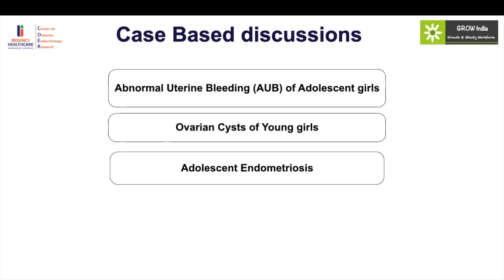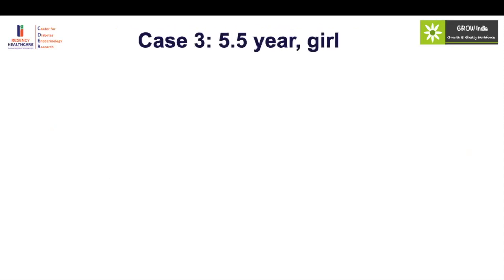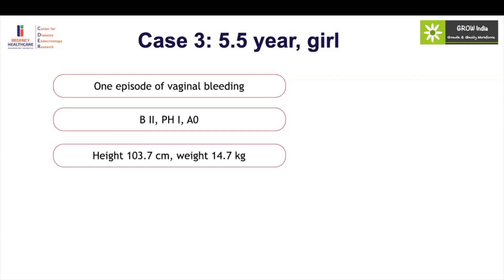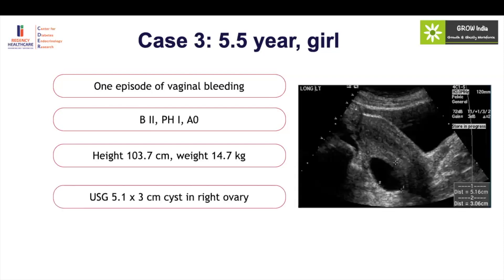Coming on to the second case of ovarian cysts in a young girl. This is a five-and-a-half-year-old girl with one episode of vaginal bleeding, some breast development and pubic hairs. Her height is 103 cm and weight is appropriate for age, with an ovarian cyst found on ultrasound. With such a young girl and ovarian cysts, vaginal bleeding generally concerns gynecologists because we are more tuned to look for malignant disorders. But I would like to say that the majority of simple ovarian cysts, even in young girls, are functional. Malignancy is also rare even in childhood, and not every cyst should be worked up only for malignancy.